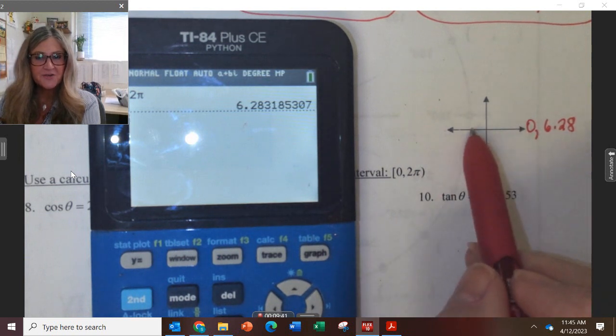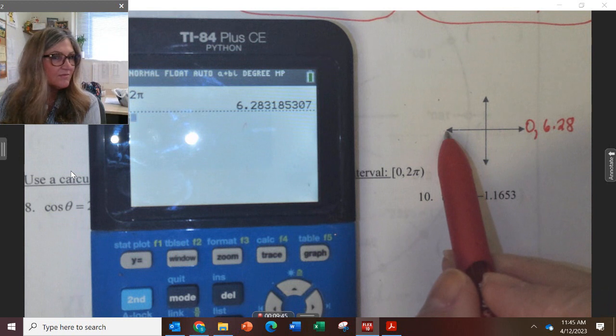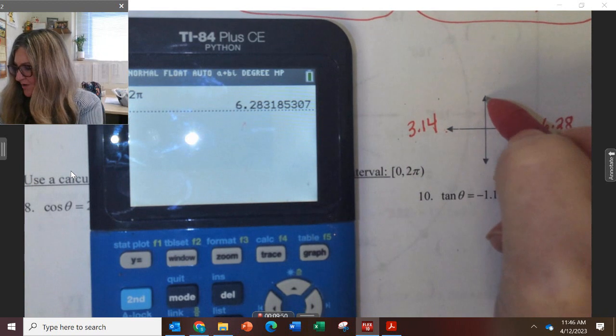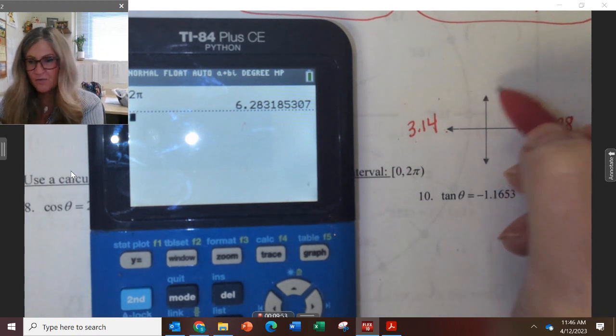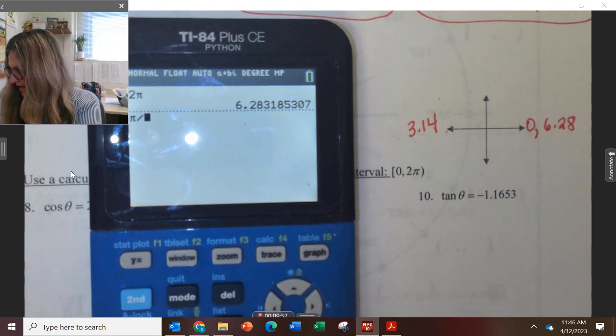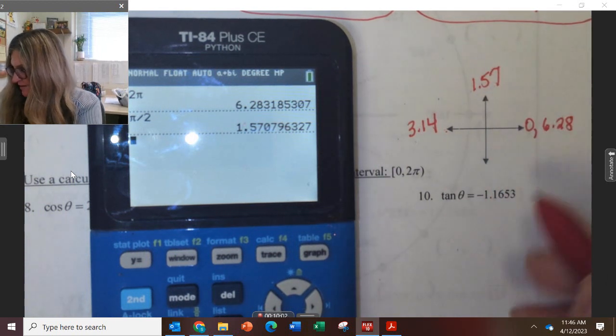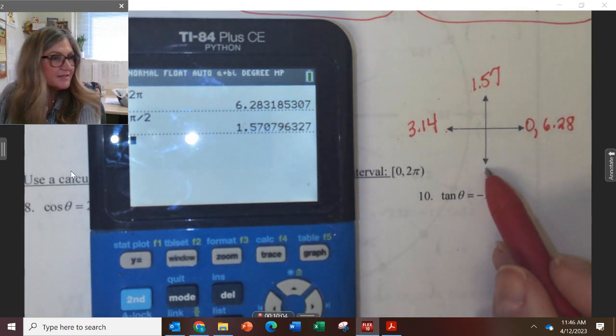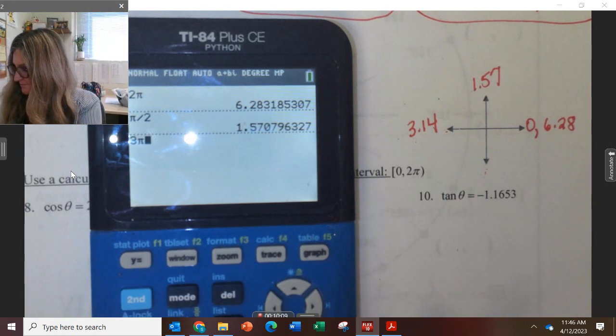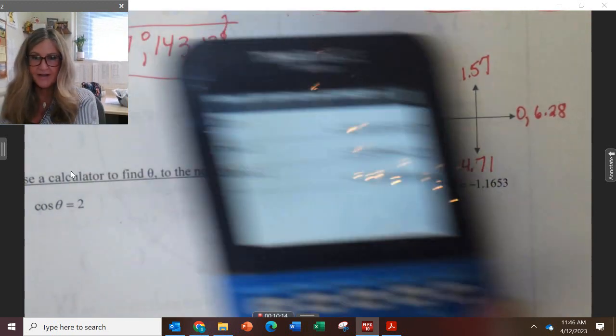Right here is 180 degrees, which is how many radians? 3.14. What about right here? That's pi over 2. Do you know what that would be in radians? Pi over 2 is 1.57. And then right here is 3 pi over 2, so that's 4.71 radians.